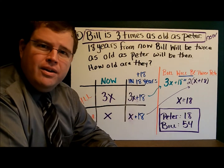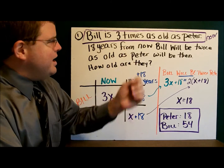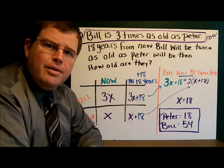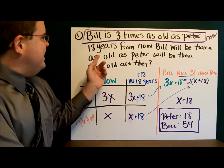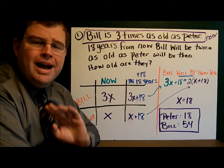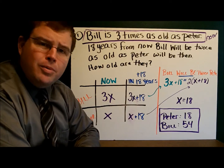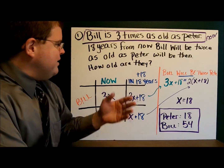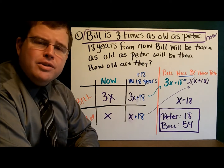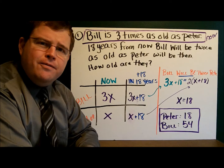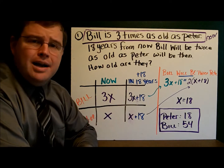In the first example we have Bill. What they tell us is that Bill is three times as old as Peter — that's what's happening right now. Then they go on to tell us a little bit more information. They tell us that 18 years from now, Bill will be twice as old as Peter. The question is: how old are they today, right now?